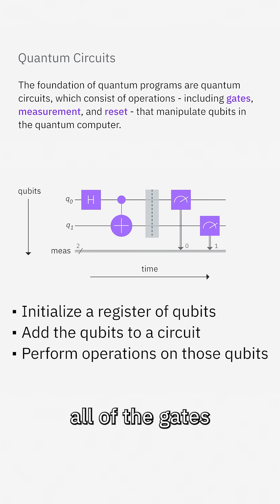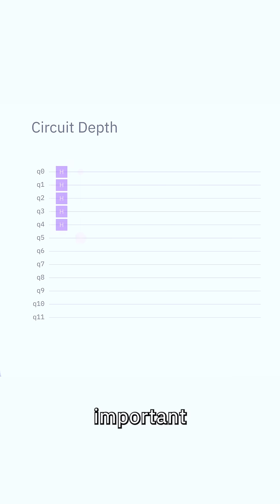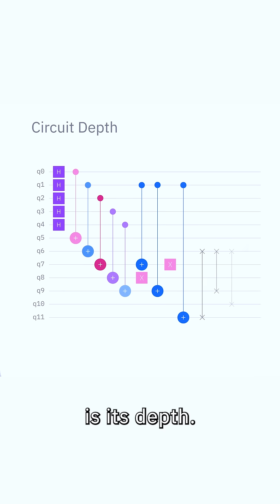After all of the gates are applied, we can perform measurements, which cause the results to be written onto classical registers. One particularly important characteristic of a circuit is its depth.